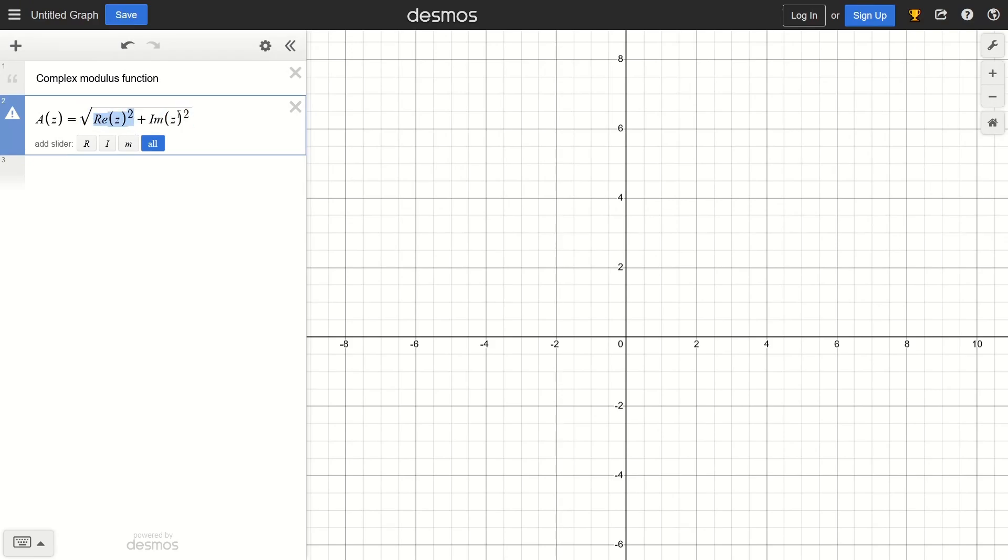So instead of this we're going to write z.x squared. So this is going to pull the x coordinate inside the tuple that is stored in z. So this function acts on a tuple or a coordinate point z and returns a value, a scalar value. So instead of im of z we're going to have z.y squared.